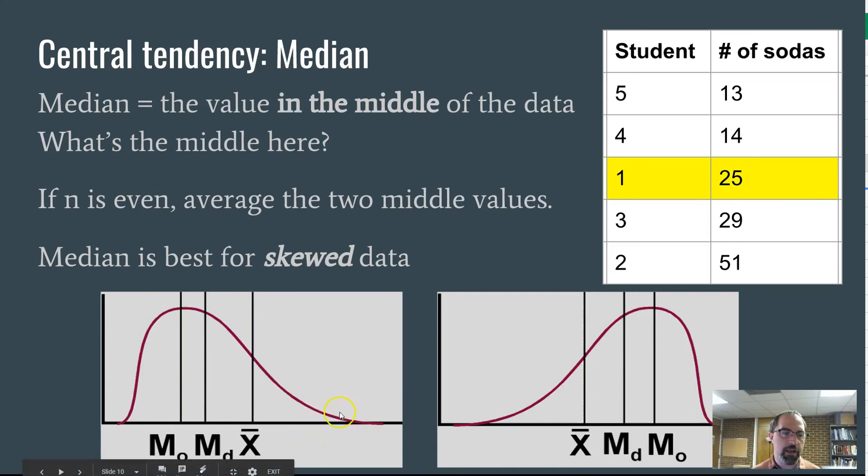In this case, X bar you can see down here is pulled too far to the right and the median sits right here. That can actually be a truer measure of the middle of the data set. In this case, it's not a drastic difference, 26 versus 25, but in some cases when we look at things like income, it can be really significant.